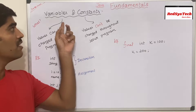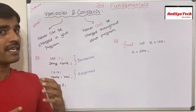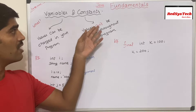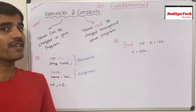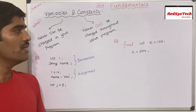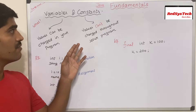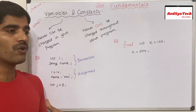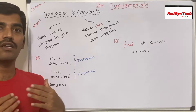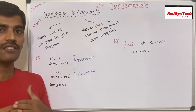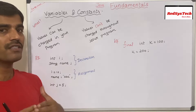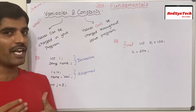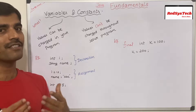As the name suggests, variables are values that can be changed in your program. And constants are nothing but values which we cannot change throughout the program. Basically, when we deal with any class, interface, or program logic, if I feel that I don't want anyone to change the value of a particular variable, then I can make it as a constant. And if the value is going to change, then I can make it as a variable.